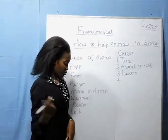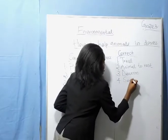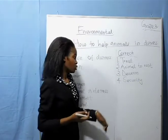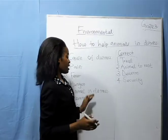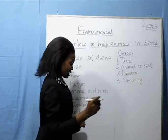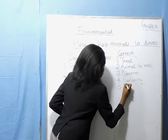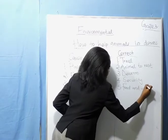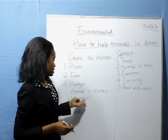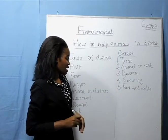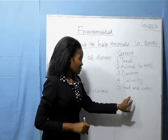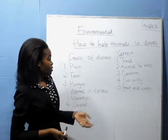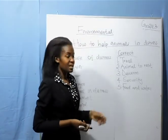The fourth thing is to provide security. If the hens are scared of wild dogs, you will provide enough security for the hens to be safe. And give them enough food and water, because some distress may be due to hunger. These are some of the things you need to do to prevent distress in animals.